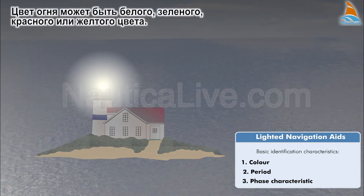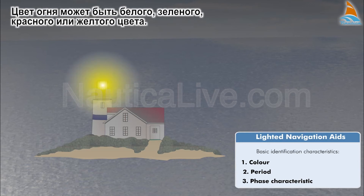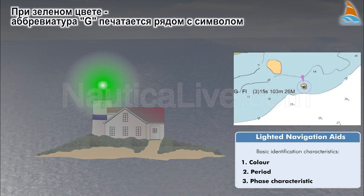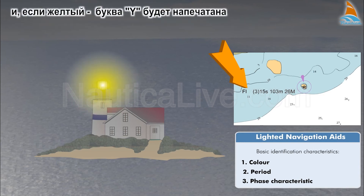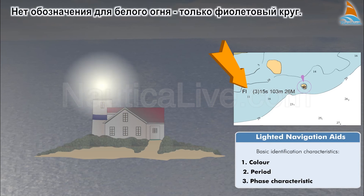The color of the light can be white, green, red, or yellow. If the color is green, the abbreviation G is printed near the symbol. If the color is red, the abbreviation R is printed near the symbol, and if it's yellow, the letter Y is printed. There's no abbreviation for white light, only the purple circle.